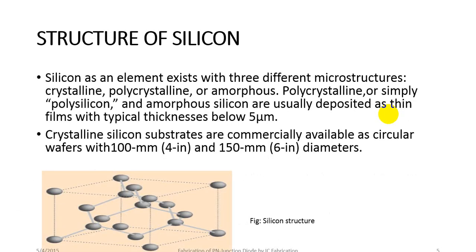Silicon as an element exists with three different microstructures: crystalline, polycrystalline, or amorphous. Polysilicon and amorphous silicon are usually deposited as a thin film with typical thickness below 5 micrometres. Crystalline silicon substrates are commercially available as circular wafers with 100mm (4 inches) and 150mm (6 inches) diameter.